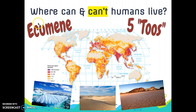This brings us to the concept of ecumene — the portion of the earth's surface that is inhabitable by humans. Seventy-five percent of the world's population lives on just five percent of the earth's surface. Keep in mind that about 71 percent of the earth's surface is covered by oceans, which accounts for much of the uninhabited area.